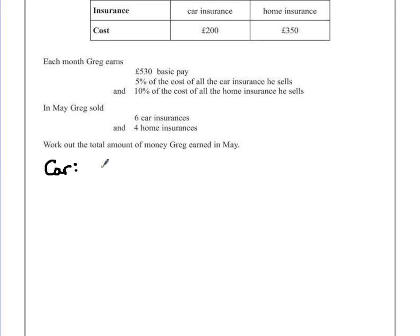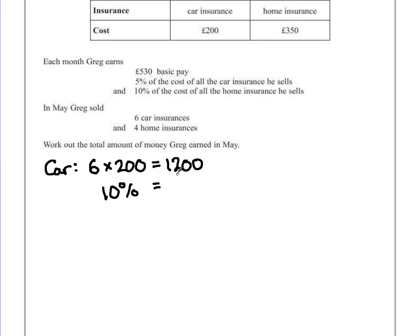He sells 6 car insurances, each one is £200. I would use the second page to show any form of calculations that you need. In this case, 6 times 200 is £1,200. So that's the cost of the car insurance, but he only gets 5% of this. So 10% of the car insurance is when you divide by 10, so we would end up with £120. 5% is just half of that value. So half of £120 is £60. So Greg gets £60 from the car insurance.